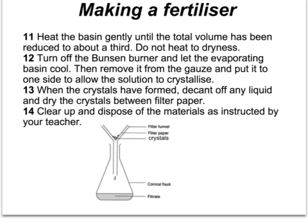If we wanted to make any other fertiliser, we do it in pretty much the same way, except we'd choose a different acid and a different alkali. For example, to make ammonium sulphate, we'd use ammonia as our alkali in the flask and sulphuric acid as the acid in the burette.